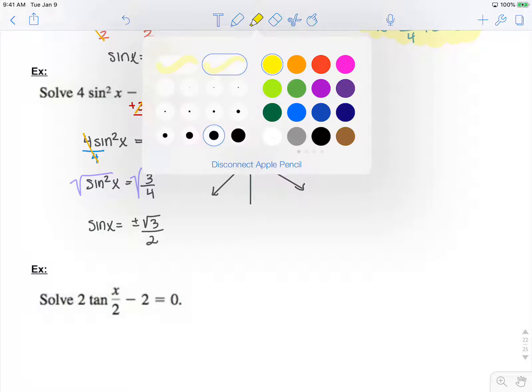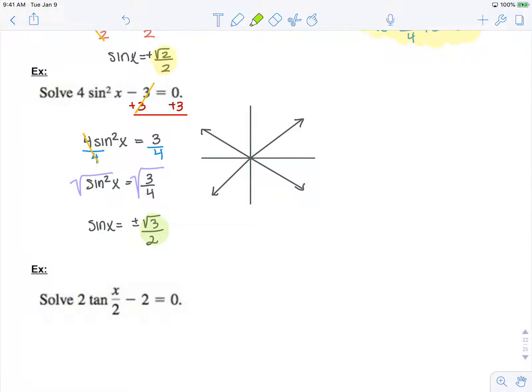Now, which angle has sine x equal to square root 3 over 2? That's going to be 60 degrees for each of these. So I can see that x equals pi over 3, 2 pi over 3, 4 pi over 3, and 5 pi over 3 on the interval from 0 to 2 pi.